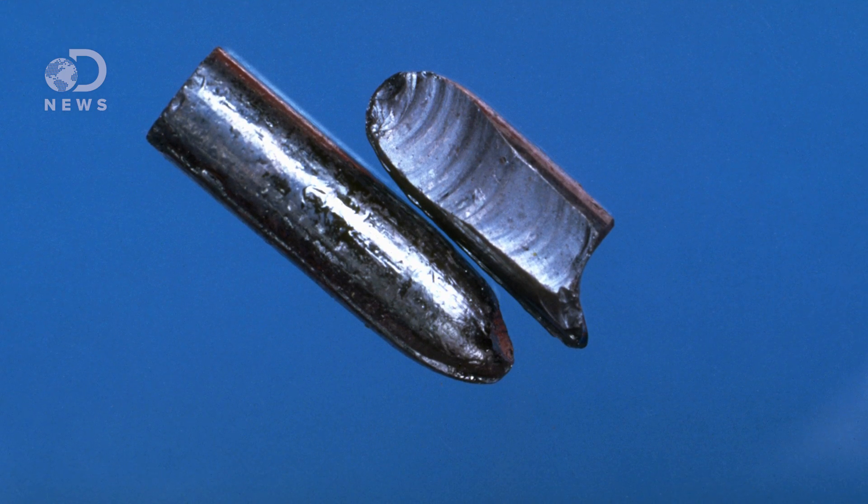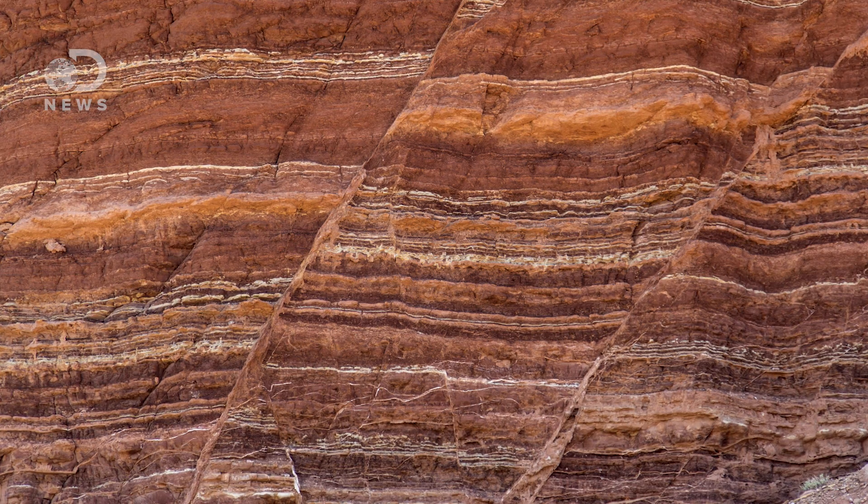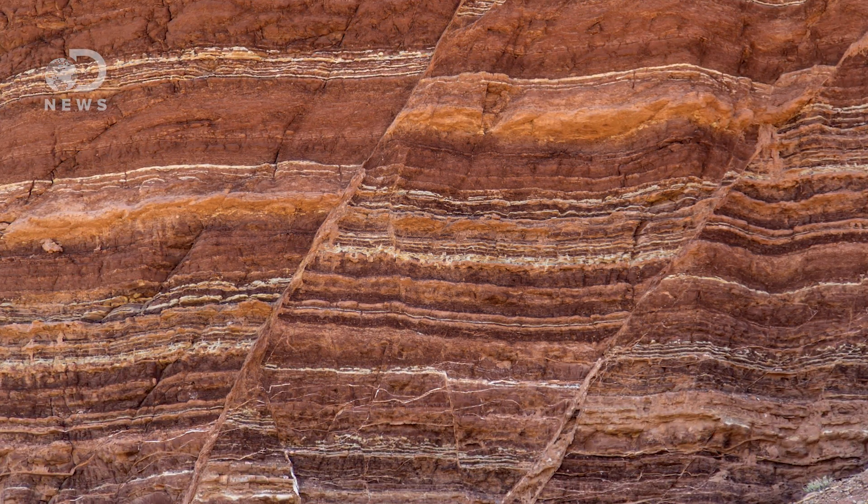In this case, they looked for a form of the element selenium in sedimentary rocks over 2 billion years old. Selenium reacts when it's exposed to oxygen, so the researchers were trying to find evidence of oxidation. This would be a clear sign that there had been oxygen in the air at the time.